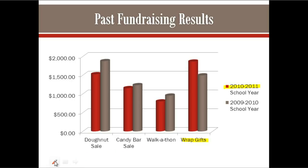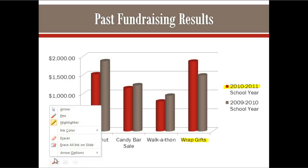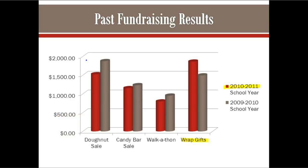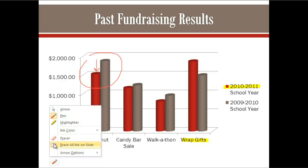See how it works? Let's try the pen tool. Here we can see that funds raised by the donut sale went down to slightly less than $1,500. Use the same menu if you want to erase all the ink on your current slide or switch back to the mouse pointer.